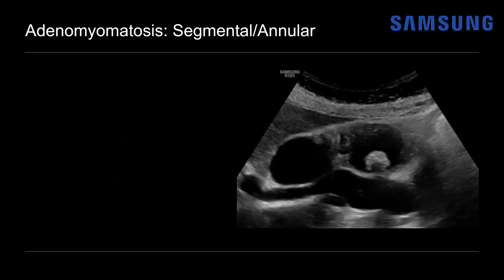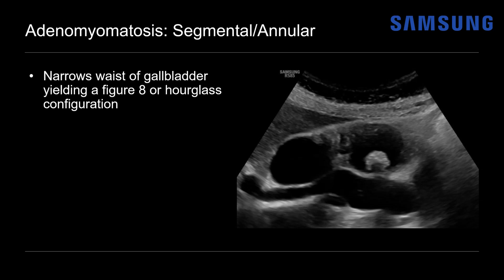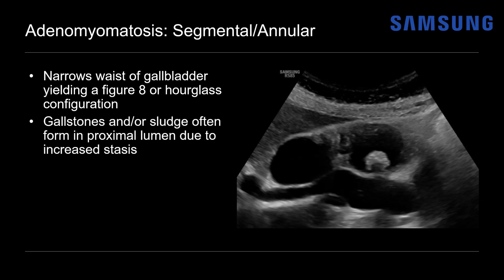The segmental or annular type narrows the waist of the gallbladder, yielding a figure-eight or hourglass configuration. Something unique to this type is that the annular narrowing at the central lumen causes stasis of bile in the proximal aspect of the gallbladder, which promotes gallbladder sludge and stone formation. This form is therefore more likely associated with stones. The configuration can be somewhat confusing if not recognized — it may appear as though there are two separate cystic areas: a simple cystic area and then a gallstone-filled gallbladder.